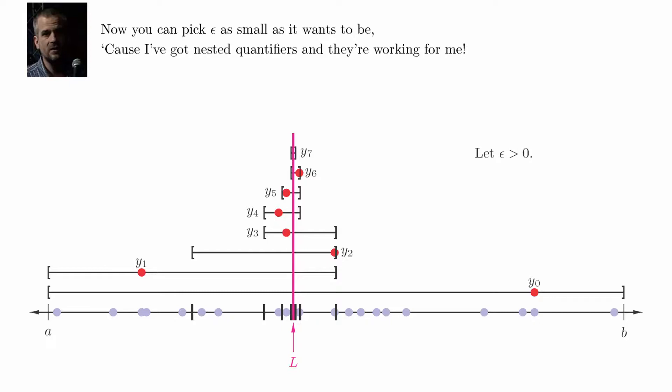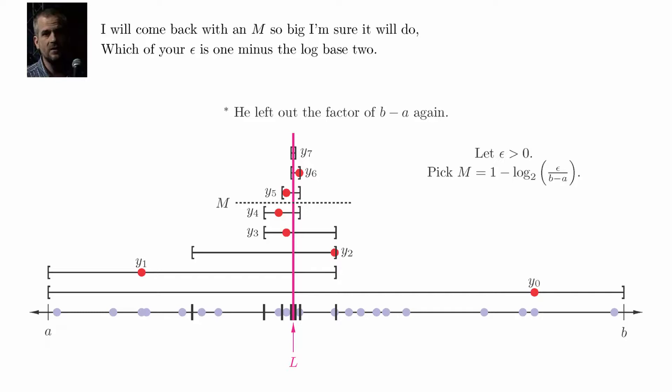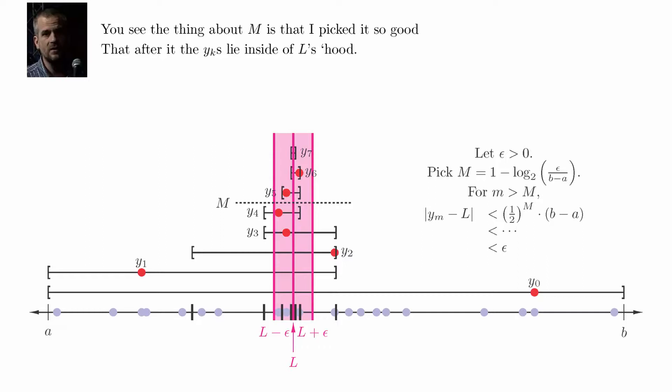Now you can pick epsilon as small as it wants to be. Cause I got nested quantifiers, and they're working for me. I will come back with an M so big I'm sure it will do. Which of your epsilon is 1 minus the log base 2? You see, the thing about M is that I picked it so good that after it, the Y_k's lie inside of L's hood. L's hood is epsilon size, so all the intervals lie in it. QED, you got a sequence that converges to a limit.